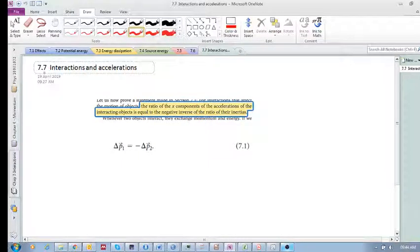So let's move on to section 7.7, interactions and accelerations. In the earlier part of this chapter we made this statement that the ratio of the x components of the accelerations of the interacting objects—so if you've got two interacting objects, one and two, they're interacting and they collide, obviously they interact—so the ratio of their accelerations...